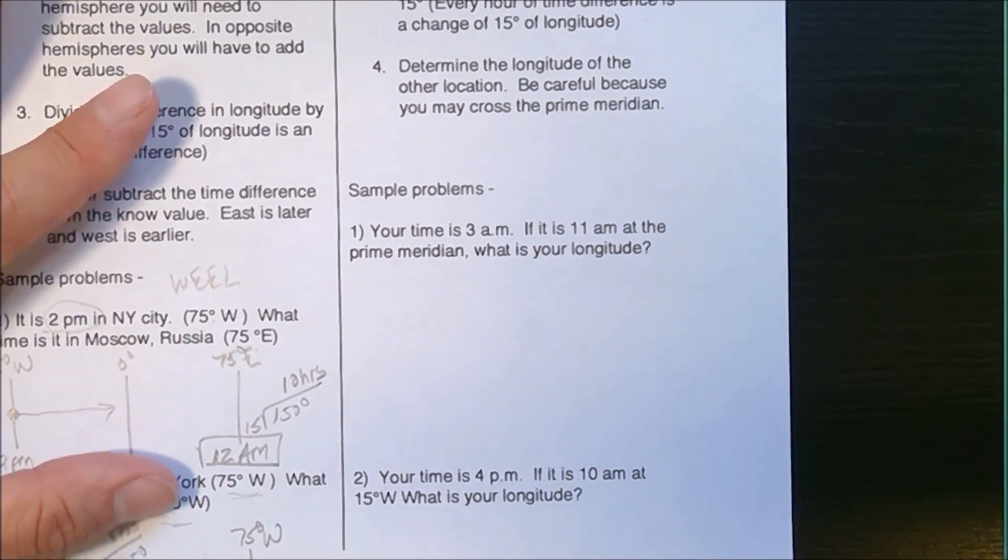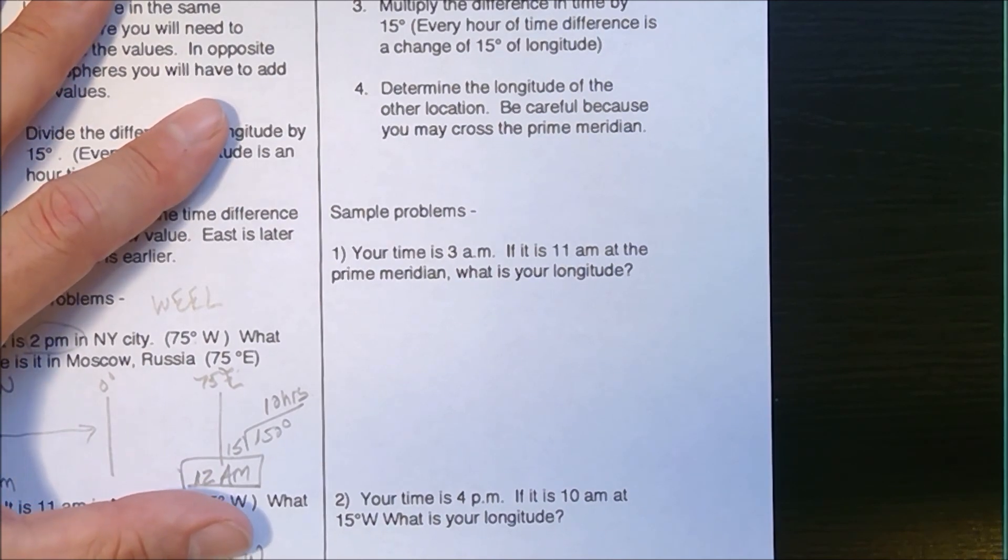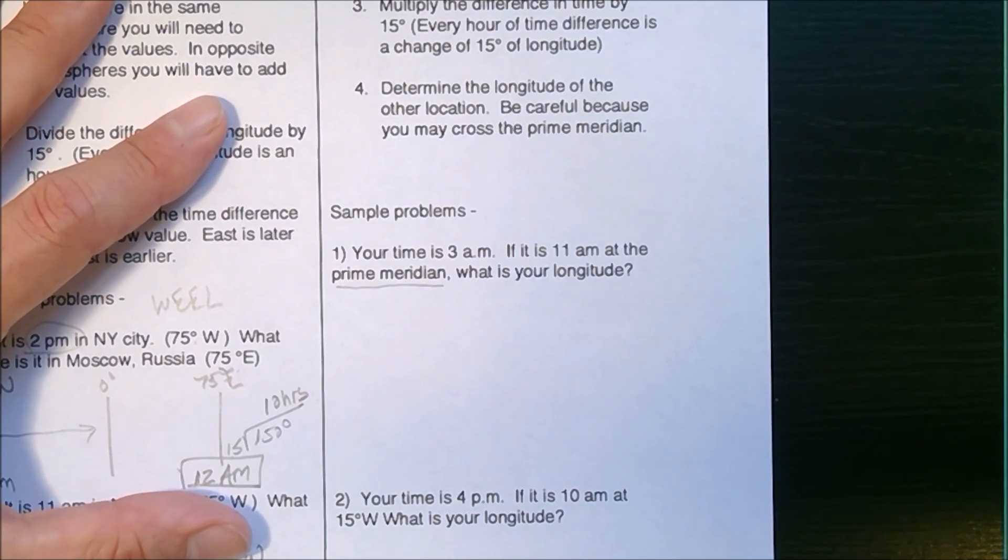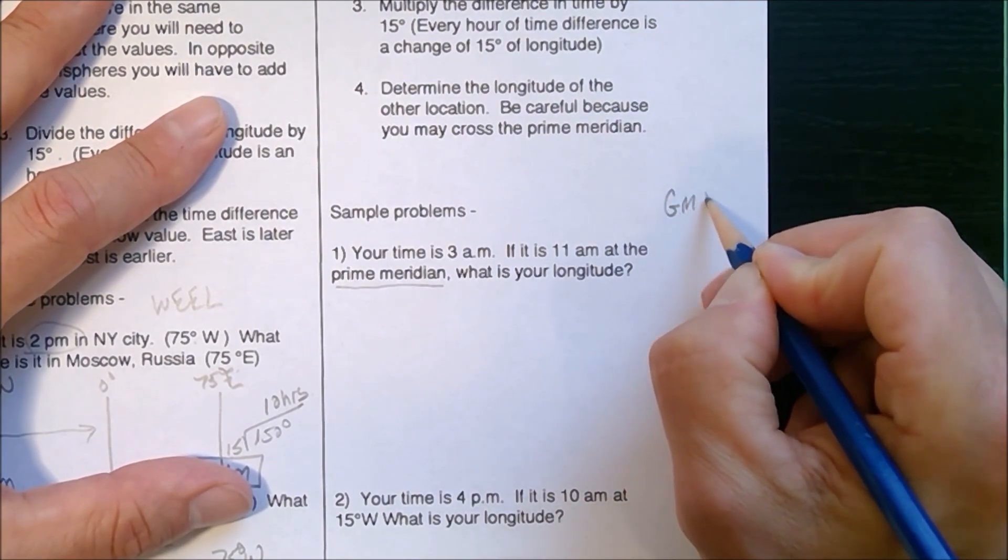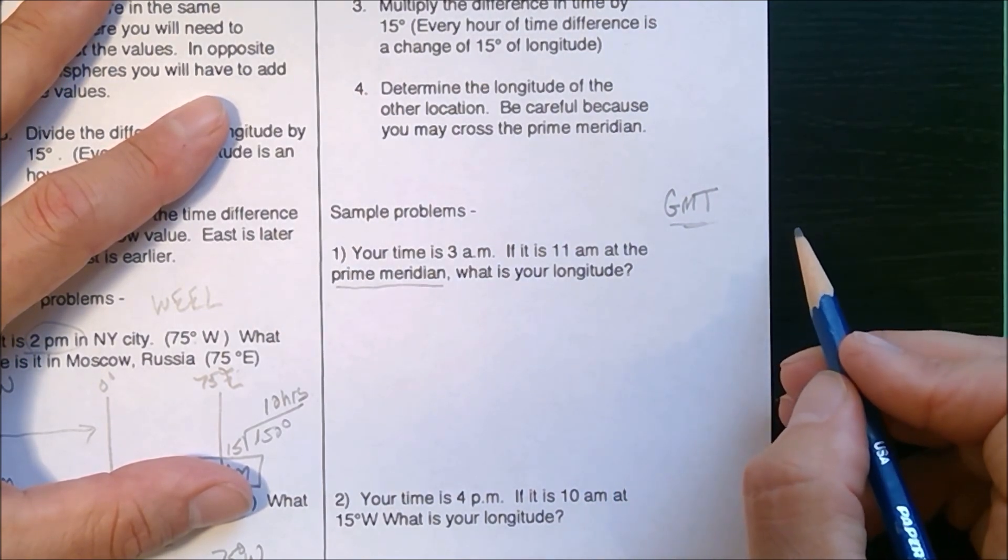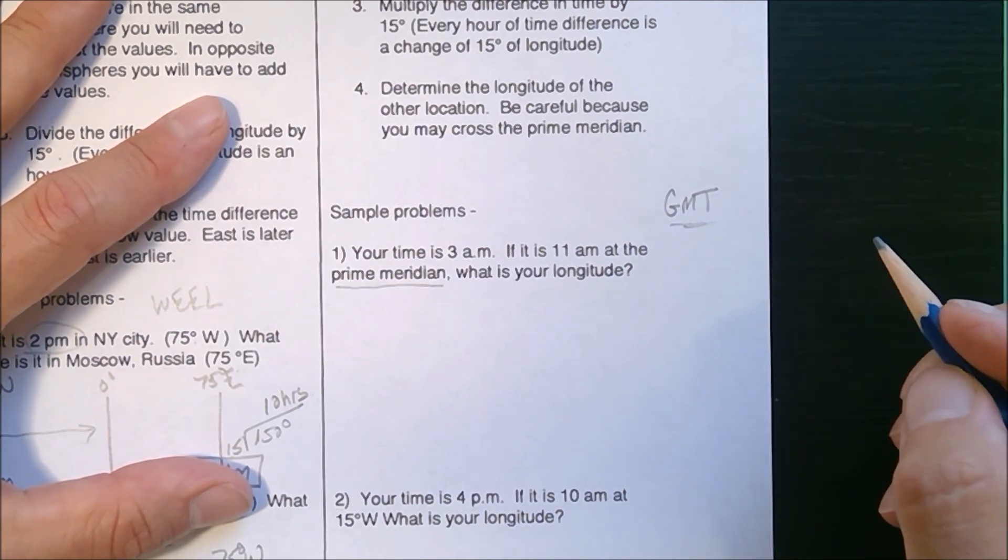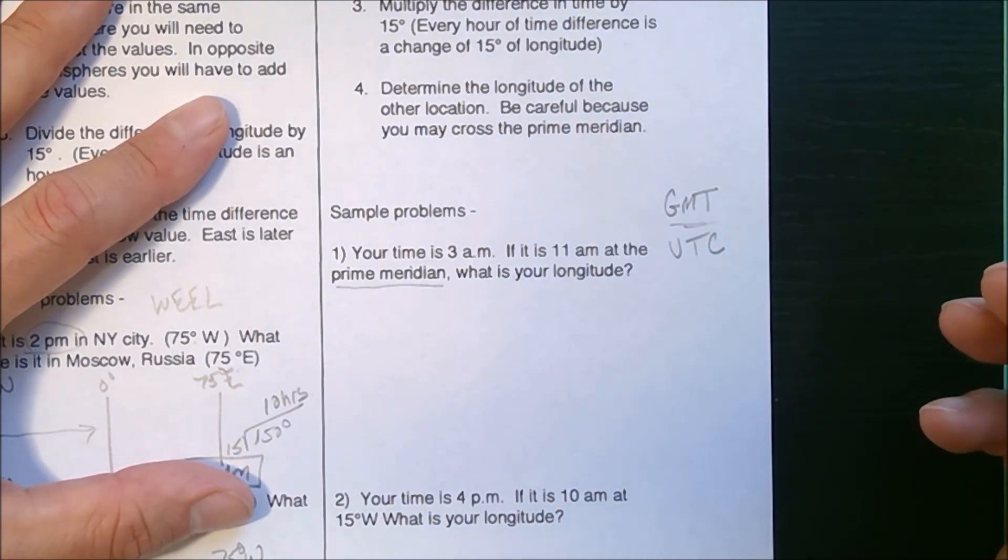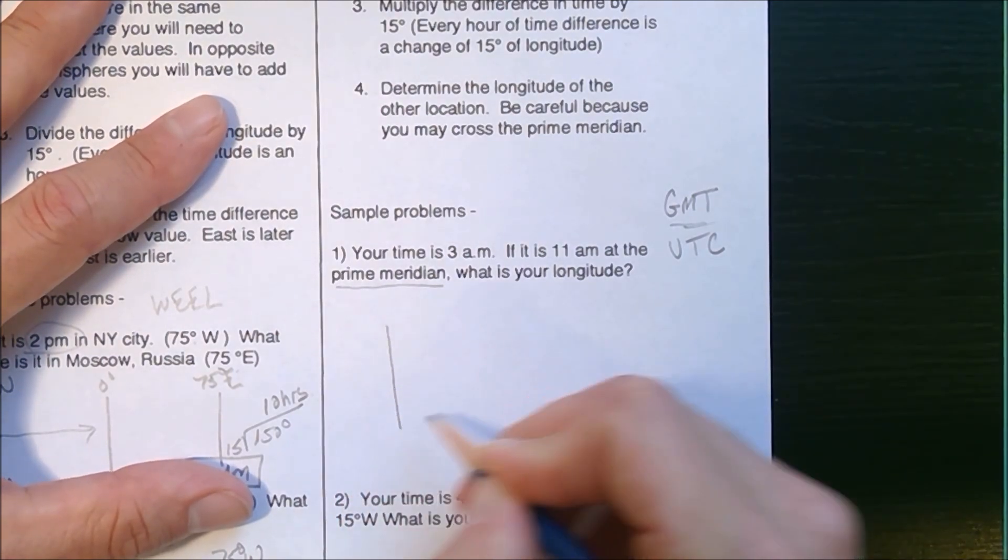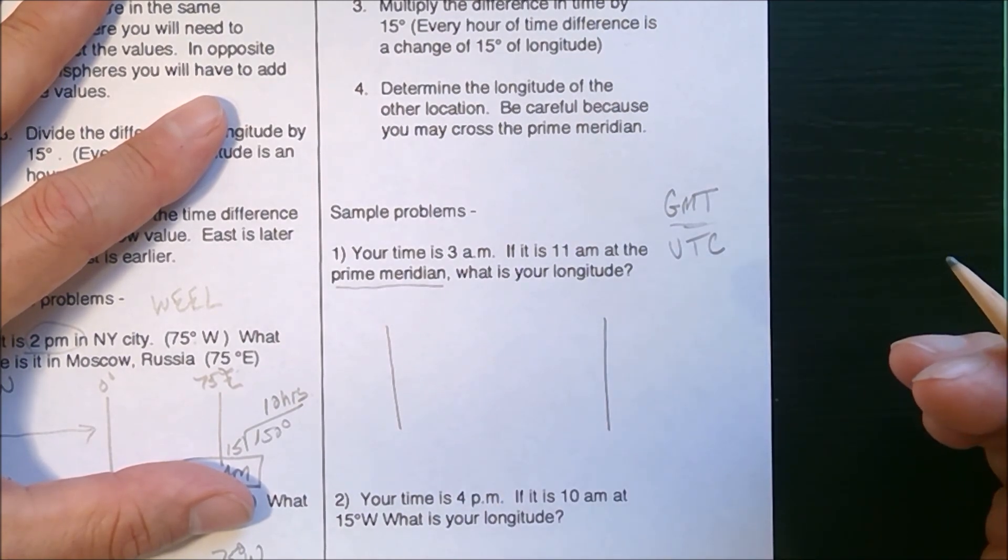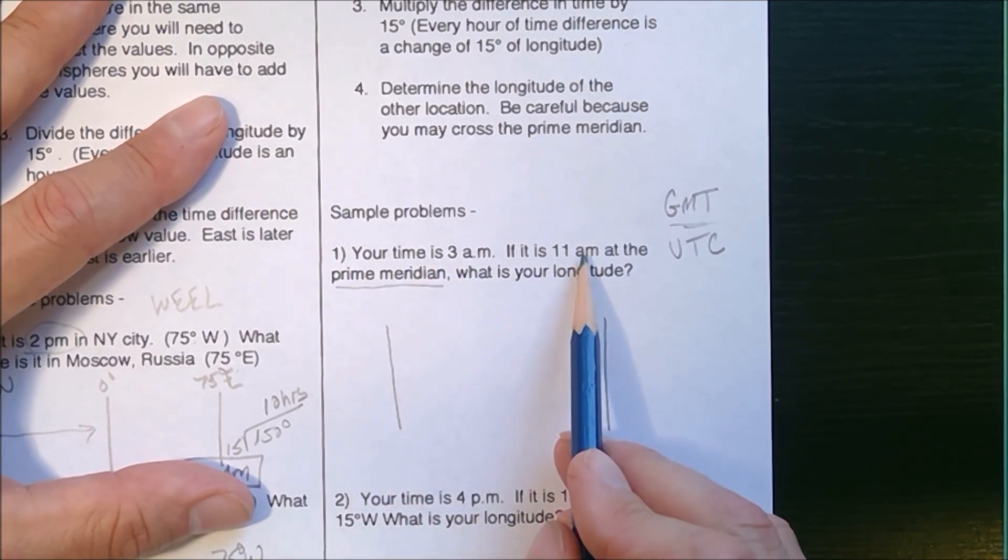If we look at the other side, these are going to be two times and one longitude. This one's actually giving you a special longitude: the prime meridian. Historically, they called time at the prime meridian GMT. So you might see questions where they say GMT - Greenwich Mean Time - that's the time at the prime meridian. A more modern usage is UTC or Z time, universal time. But same idea. I'm going to draw two meridians.